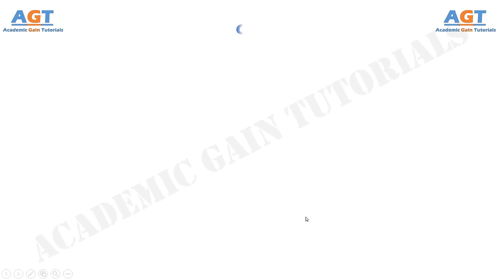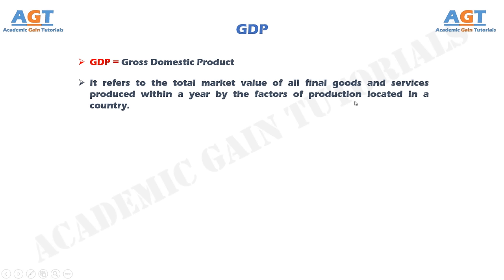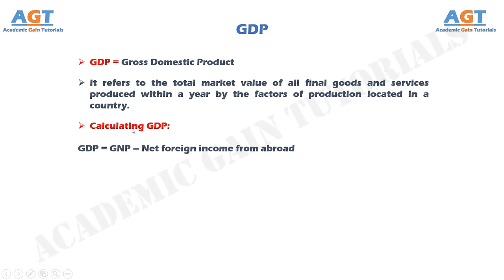GDP: the term GDP is the abbreviated form of gross domestic product. It refers to the total market value of all final goods and services produced within a year by the factors of production located in a country. GDP is obtained by subtracting the net foreign income from abroad from GNP.